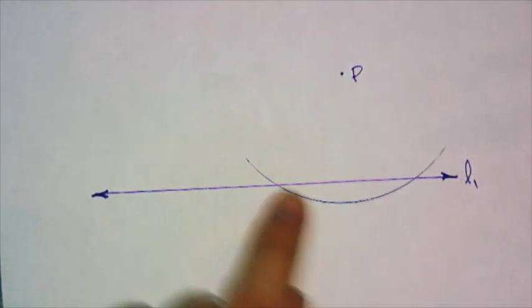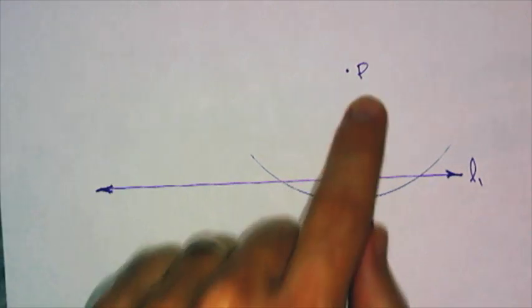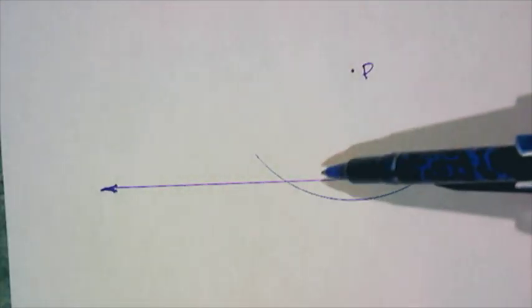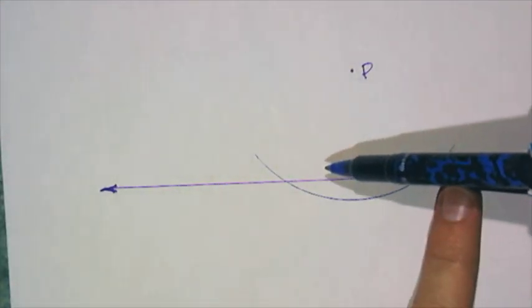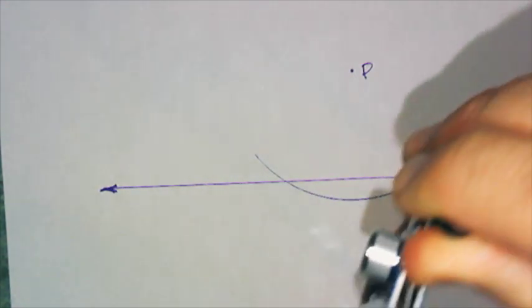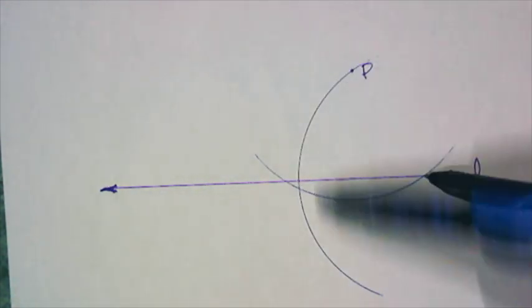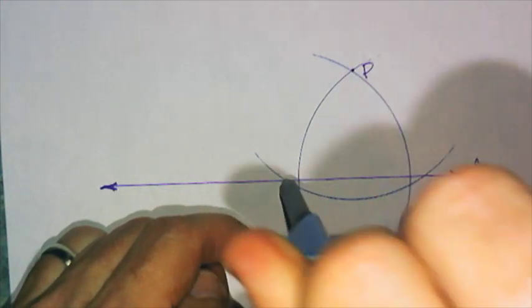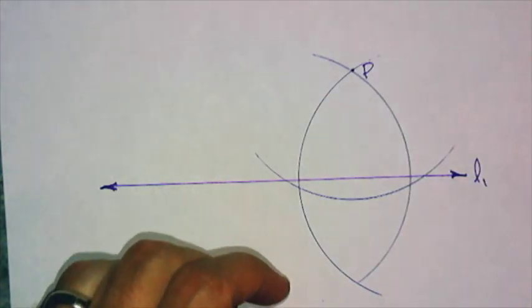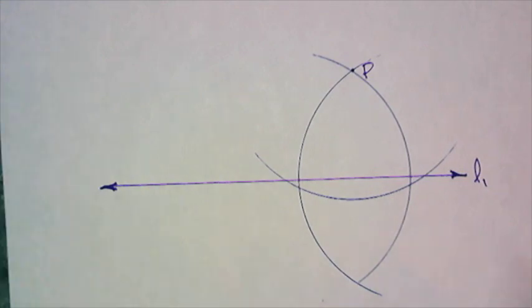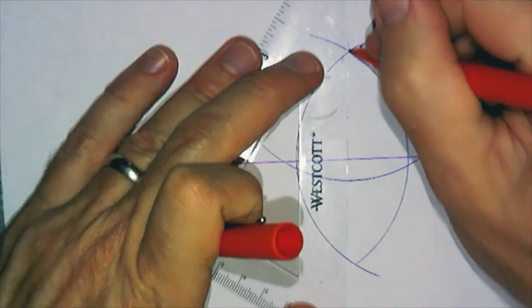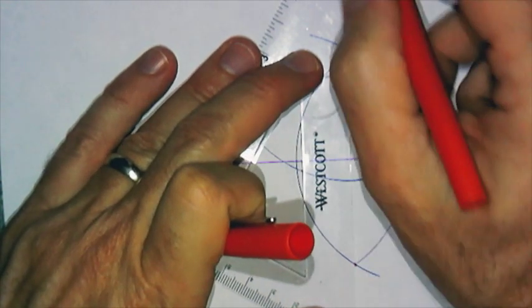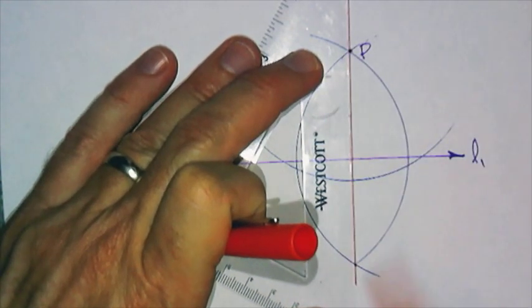Okay, those two points are equidistant from P, so I can make an angle bisector, a perpendicular bisector. Here. That will go through P. And I will make it extra long.